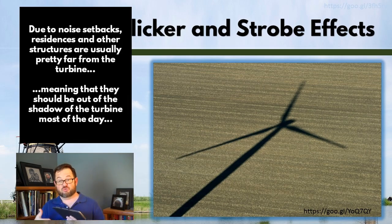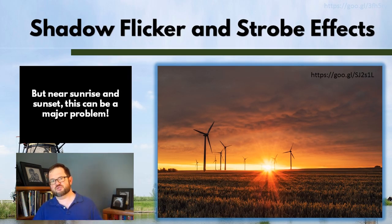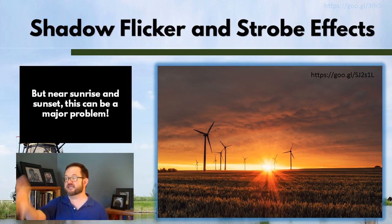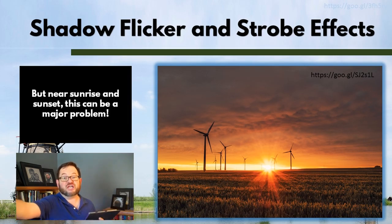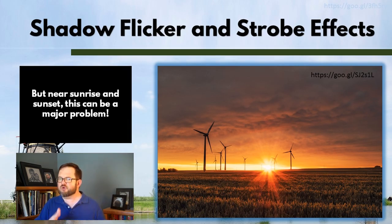In general, the sun is high enough in the sky that this doesn't become a problem through most of the daylight hours, and of course it's not a problem at nighttime. But it can be a real problem near sunrise and sunset, where because of the extremely low sun angle you can cast an extremely long shadow from these turbines. The strobe effect as the blades pass between your eye and the sun can be projected kilometers down the line of sight. So this can be a very serious problem.